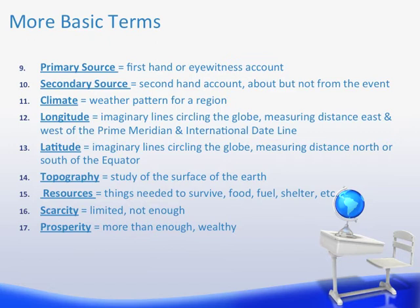Resources: these are things needed to survive — food, fuel, shelter — and remember, they can be renewable or non-renewable. Things like wood are renewable; we can always plant more trees. However, oil is non-renewable; we have a set amount of that within the earth. Scarcity means limited or not enough. Economics is based on the idea of scarcity — there is never enough of all the resources to meet all of the needs, so you have to make decisions. Prosperity means there is more than enough, or you are wealthy.